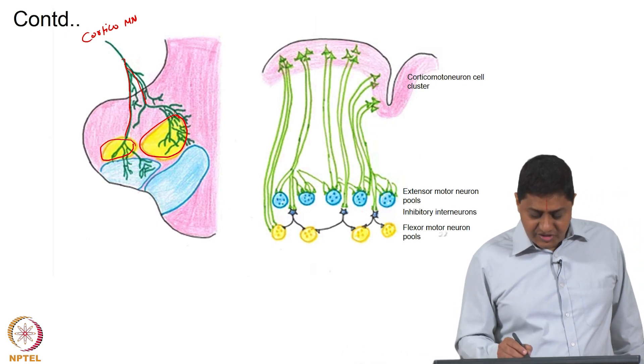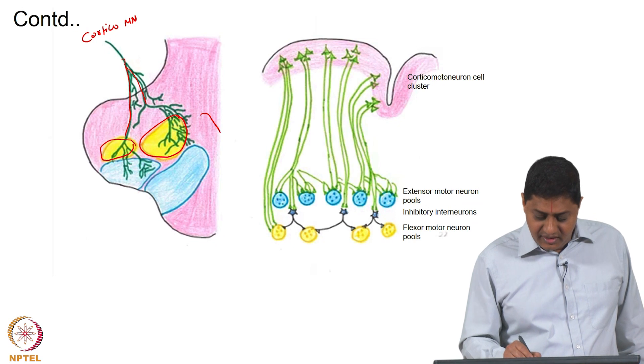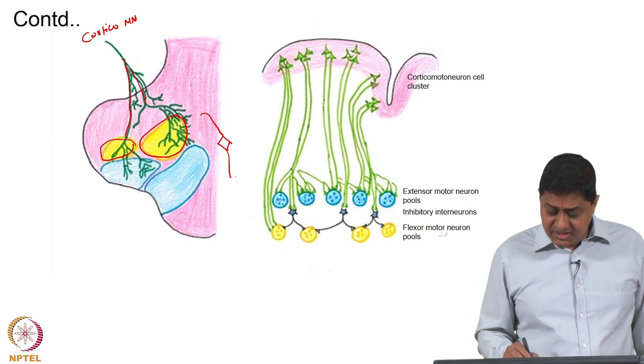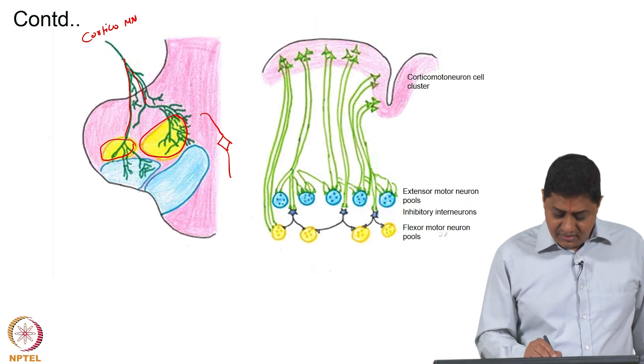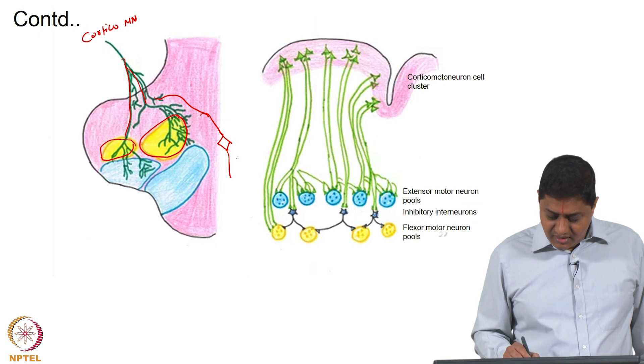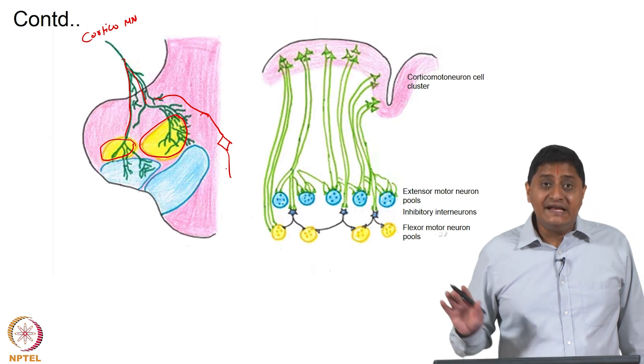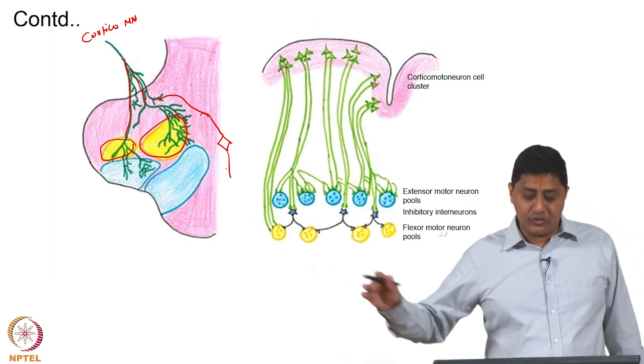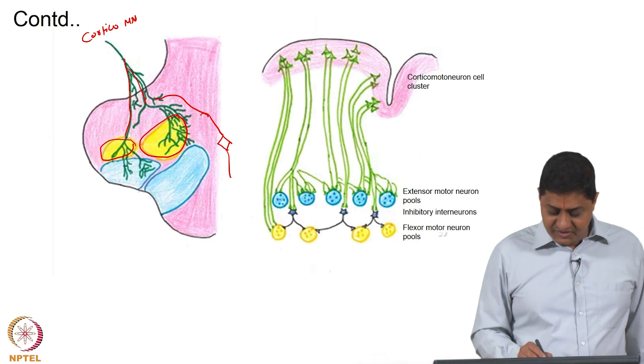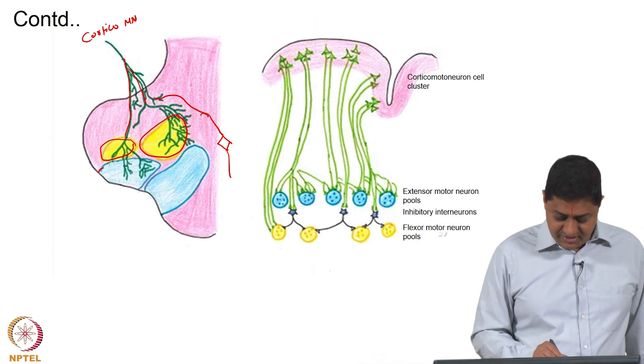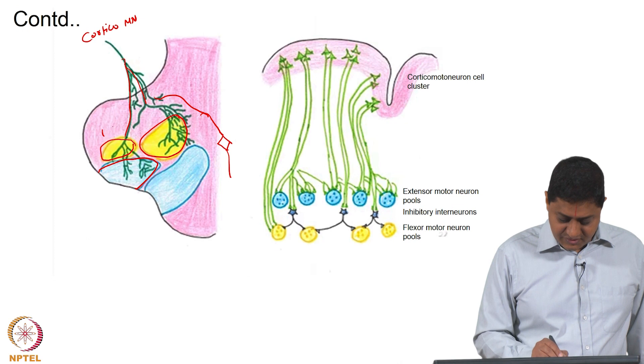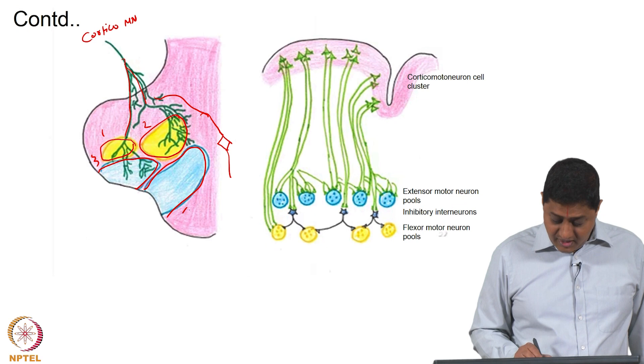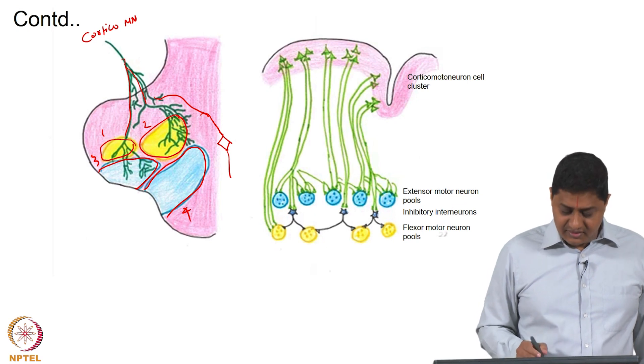What is not shown in this picture is that through inhibitory interneurons, for example through Golgi interneurons, these corticomotor neurons also inhibit the antagonists. Let us suppose these are flexors, these 4 muscles.